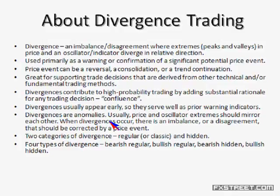Divergences are anomalies — they're not normal. When you look at price and an oscillator, their extremes — peaks and valleys — should mirror each other. If you have a higher high in price, you should have a higher high in the oscillator. If you have a lower low in price, you should have a lower low in the oscillator. When we have a divergence, that's an anomaly — it doesn't mirror each other. We're looking for price to correct that imbalance or disagreement, and that is the opportunity we're looking at in terms of trading.